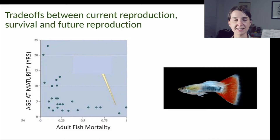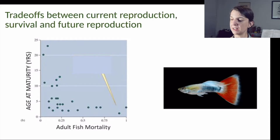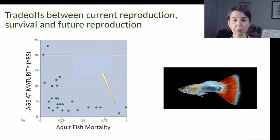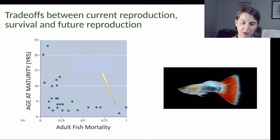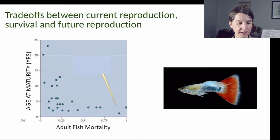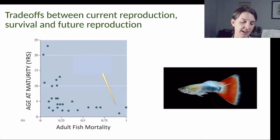Another way we can see the trade-off between current and future reproduction is by looking at the variation in the age at which organisms first become reproductively active — the age at maturity. Take a second to look at this graph and tell me what the relationship is between the mortality rate of different fish species and the age at which those species first reach maturity.